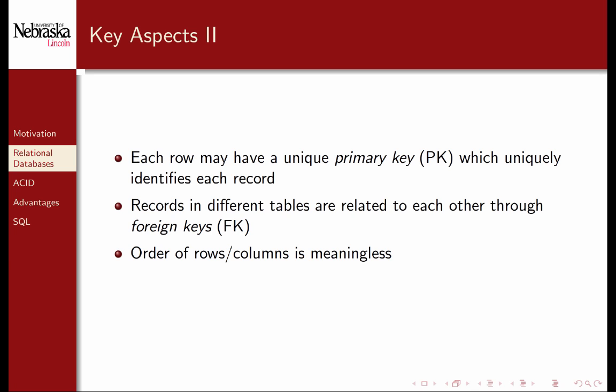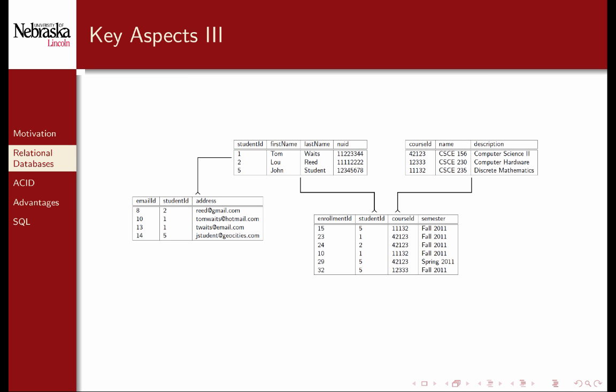Records in different tables can be related through foreign keys. For example, a student record may have multiple email addresses, which can be stored in a second table. A particular student record can reference multiple email records in the second table through a foreign key. In general, the order of the columns and rows is meaningless. Here's the same data from our flat file realized as a relational database. The pieces of data are separated into four different tables, with various relationships between tables defined using foreign keys. We'll revisit this database in detail in subsequent videos.